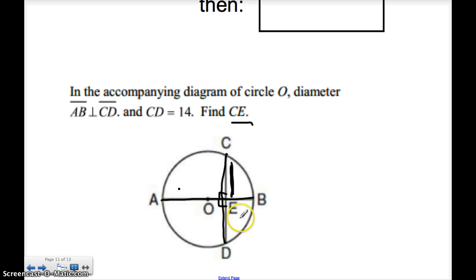Well, how would I do that? Well, just like before, if I know the whole thing is 14, if CD is equal to 14, and I'm just looking for this part right here, since it's bisected, I know it's just cut in half. So CE would just be equal to 14, cut in half, or divided by 2, which equals 7. And that would be my answer. Boom. Easy.